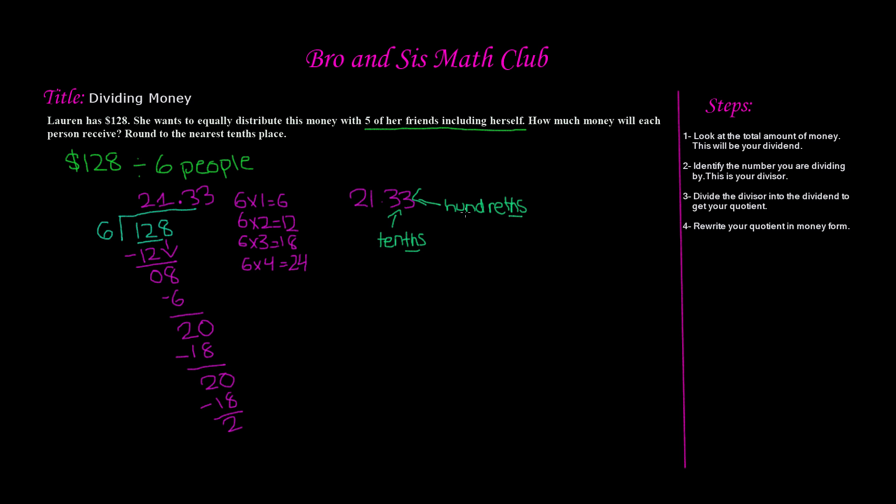So now we need to round it to the nearest tenth. Now remember this rule. If the digit in the hundredths place value is less than 5, we will go ahead and eliminate that number and we will keep the same number for the tenths place value. So that means we'll have 21.3. However, if it's more than 5, we will go ahead and round the number in the tenths place to the next digit, which is a 4, right? Because 3 and then comes 4. So that will become 21.4. But we all know that the digit in the hundredths place, which is 3, is less than 5. So we will go ahead and eliminate this. And we are left with 21.3. And this is our answer.